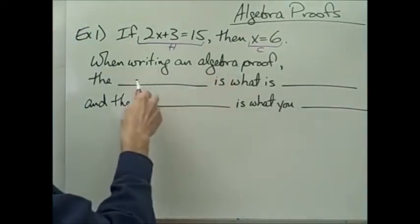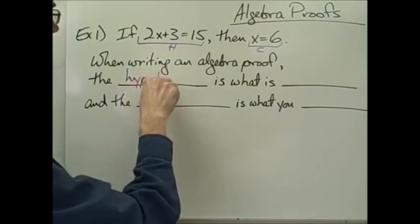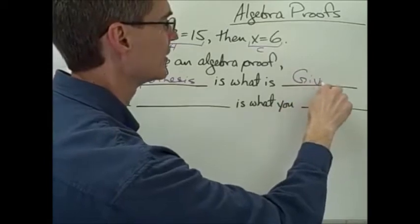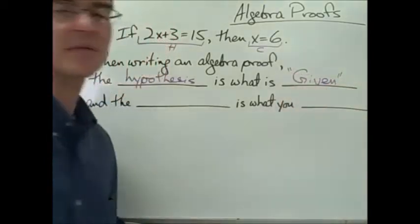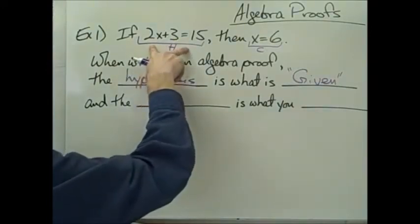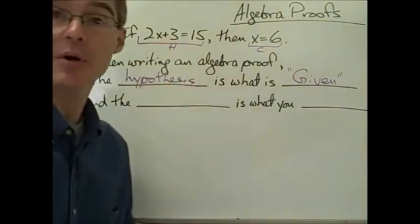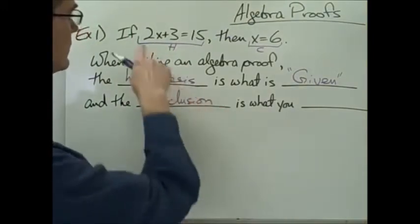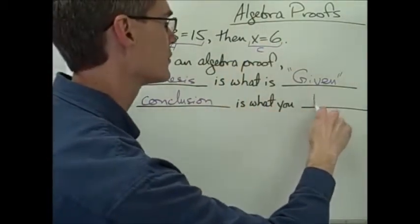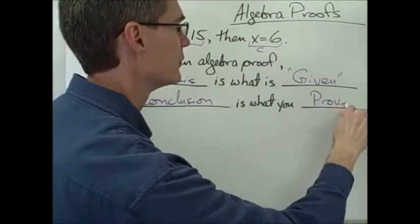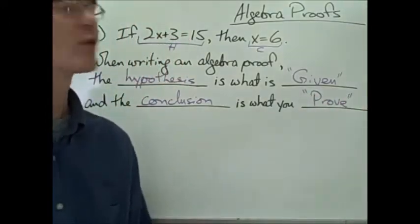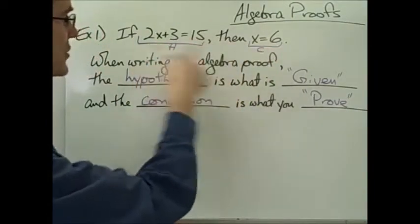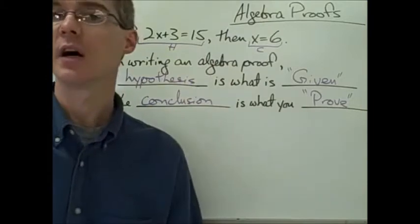When writing an algebra proof, the hypothesis is what is given. So 2x plus 3 equals 15 is the given part of our proof, and the conclusion is what you are to prove. The format of a typical proof has a given piece and a proved piece, and they match up to the hypothesis and the conclusion of a conditional statement.